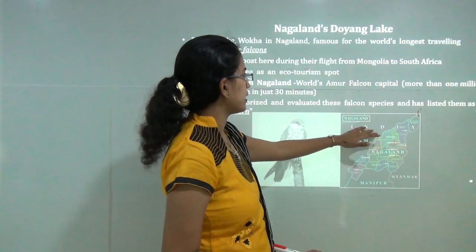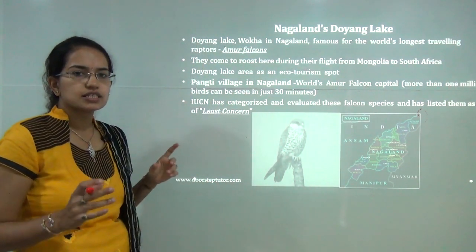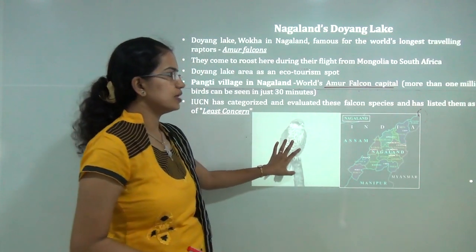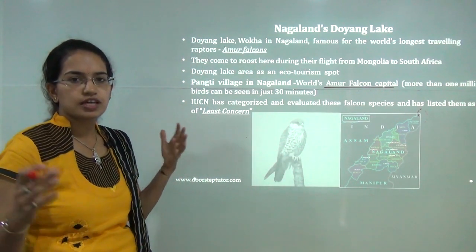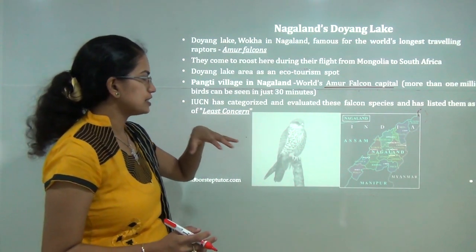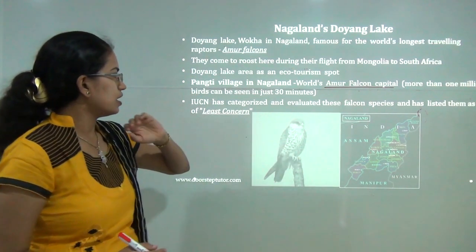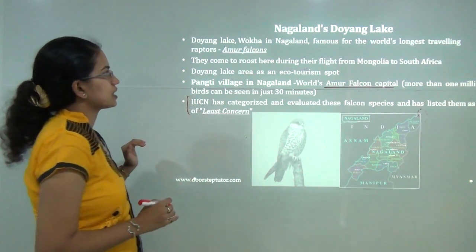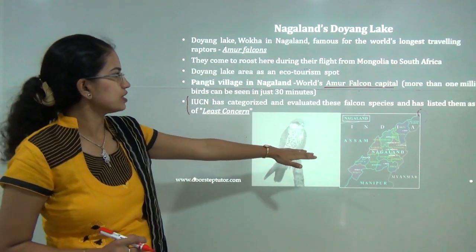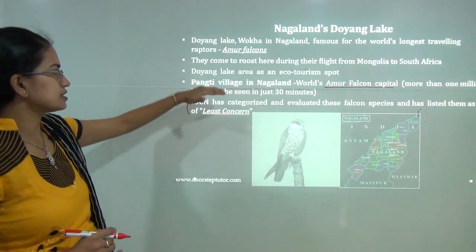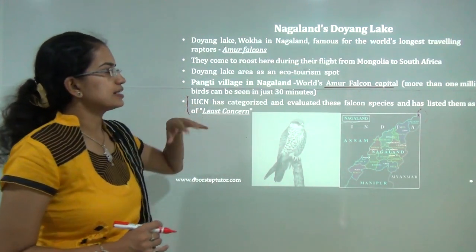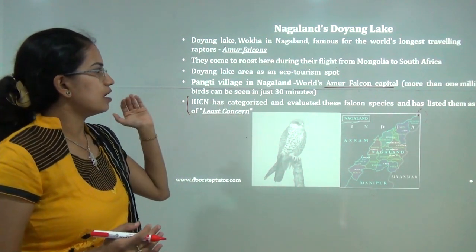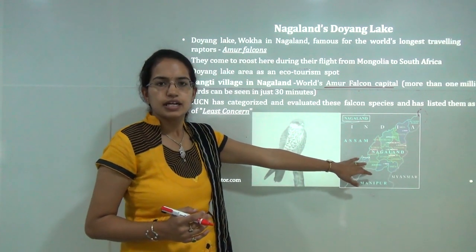Another important topic is Doyang Lake in Nagaland. This is a unique lake with the largest Amur falcon population in the world, also known as the world's Amur falcon capital. In just 30 minutes you can see more than 1 million Amur falcons in that area. While falcons are generally under the least concern category of IUCN, the Amur falcon is being threatened. They are seen near Pangti village in the Doyang Lake area, migrating from Mongolia to South Africa. The area has now been developed as an eco-tourism hotspot.